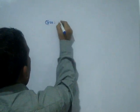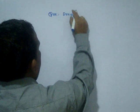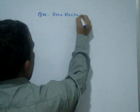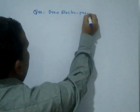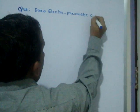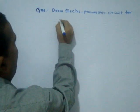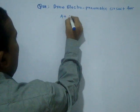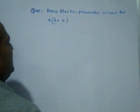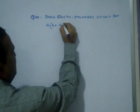The question is: draw an Electro-Pneumatic circuit for A plus and A minus, 4 times. A plus and A minus 4 times — after 4 times.